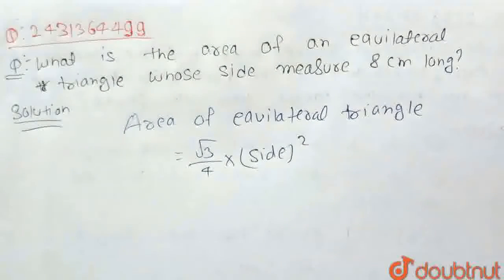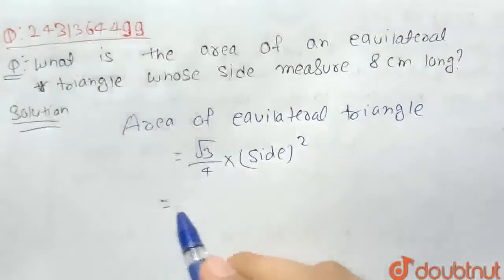As we know the sides of equilateral triangles are equal, means all sides are equal.